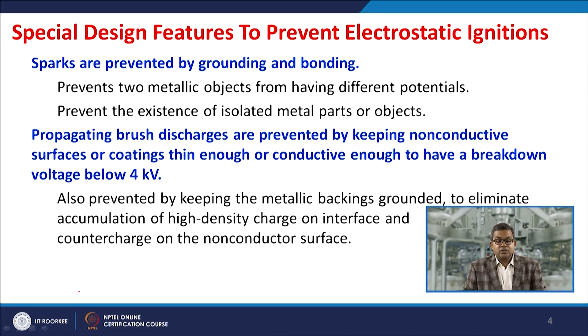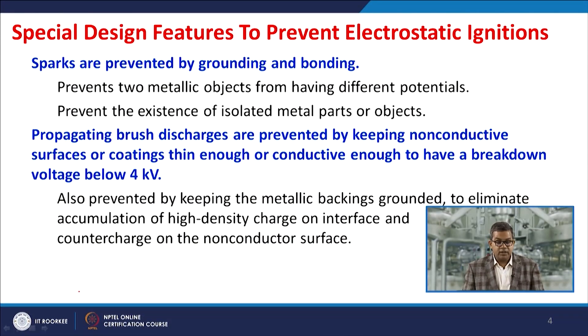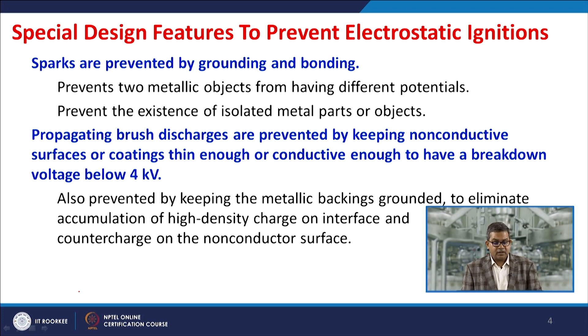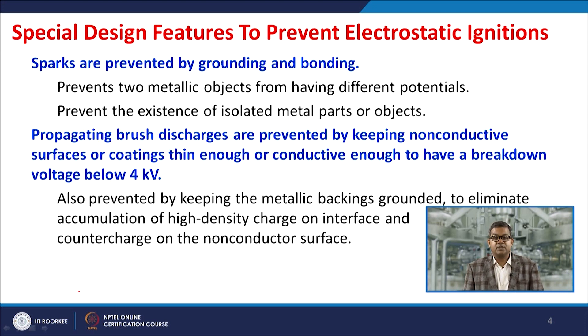Special design features for prevention of electrostatic ignition include grounding and bonding, which are common and very useful methods for eliminating the hazard. They prevent two metallic objects from having different potential and prevent the existence of isolated metal parts. Propagating brush discharges are prevented by keeping non-conductive surfaces or coatings thin enough or conductive enough to have a breakdown voltage roughly below 4 kilovolts, and by keeping the metallic backing grounded to eliminate high density charge accumulation.